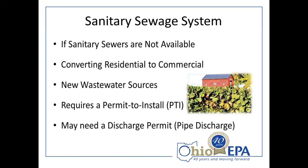Sanitary systems fall into one of two categories. One is a system that discharges into the ground — such as a mound system, tile field, or drip system — which typically does not require a discharge permit since there is no point discharge. If you have a system requiring a pipe or point discharge, in addition to a permit to install you may need a National Pollutant Discharge Elimination System (NPDES) discharge permit, covering monitoring and management requirements if you discharge to waters of the state.